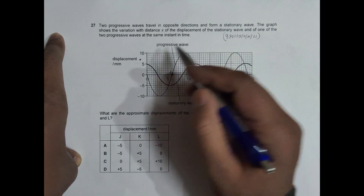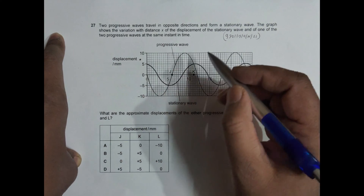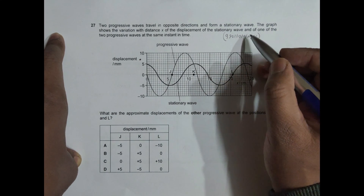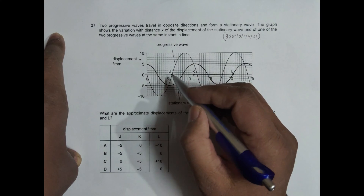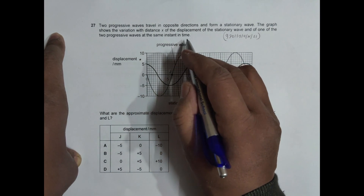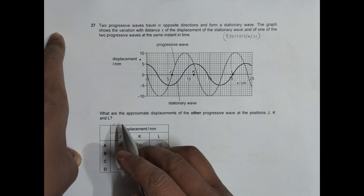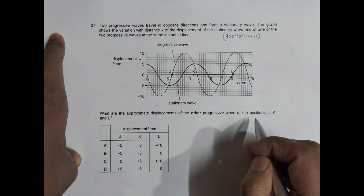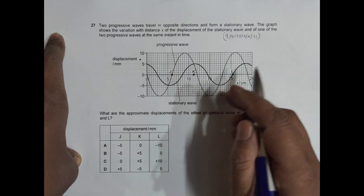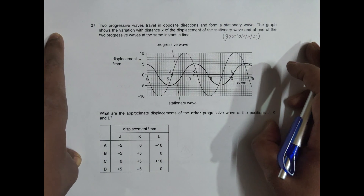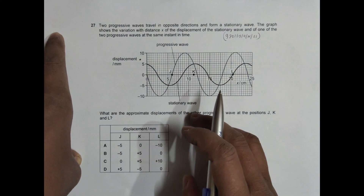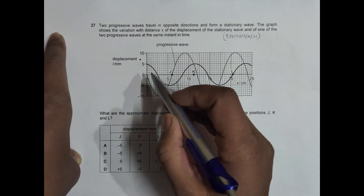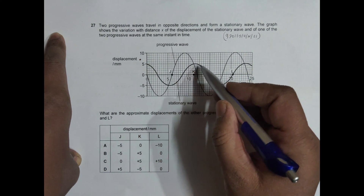The first is one of the two progressive waves. So the bold one is the stationary wave, and the other curve shown is one of the two progressive waves at the same instant of time. What are the approximate displacements of the other progressive wave at positions J, K, and L? We have to find the displacement of the other participating wave. So let us remember that the bold one is the stationary wave.